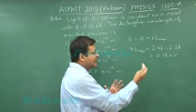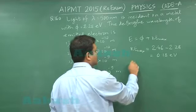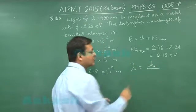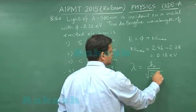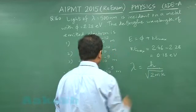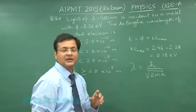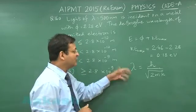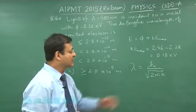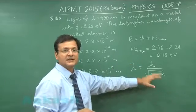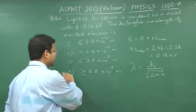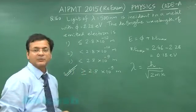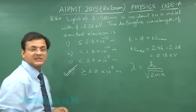So other electrons will be having lesser speed. Now de Broglie hypothesis says that h by mv so under root 2 mk. So approximately you will find that this lambda value is coming out to be 2.8 into 10 power minus 9 meter. So any value more than that will also be permitted because if the velocity becomes less then lambda will be more. So you will be marking answer fourth one, greater than or equal to 2.8 into 10 power minus 9 meter. That is the answer to question 160.